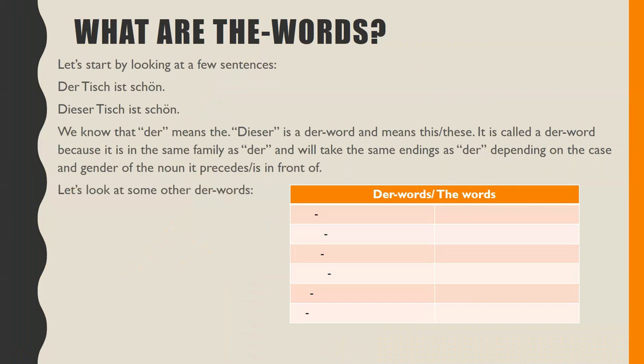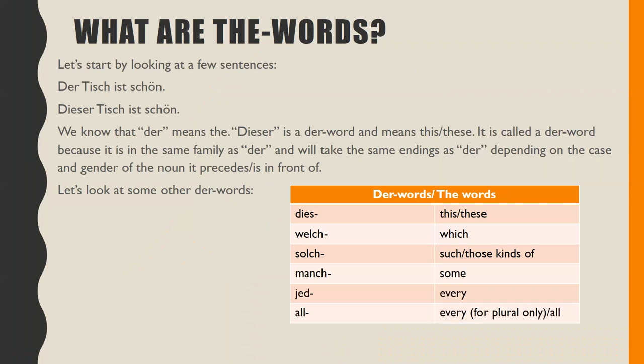Let's look at some other der words. We have 'dies' for 'this' or 'these,' 'welch' for 'which,' 'solch' meaning 'such' or 'those kinds of,' 'manch' meaning 'some,' 'jede' meaning 'every,' and 'all' meaning 'every' for plural words only, or 'all.'